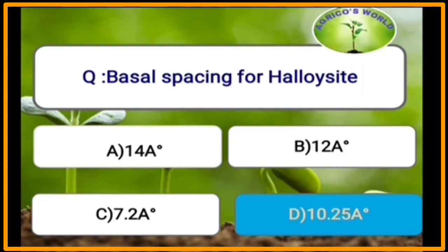Basal spacing for halloysite is 10.25 Angstroms. Halloysite is a 1:1 type of clay mineral, with a structure similar to kaolinite, and its shape is elongated tubules.